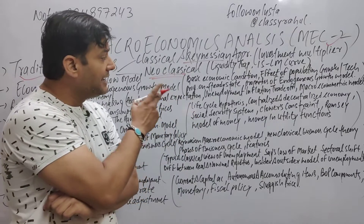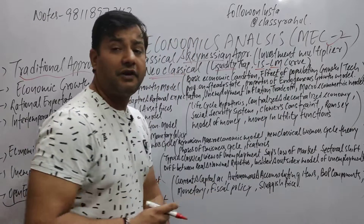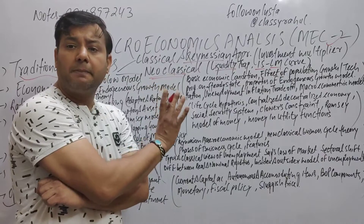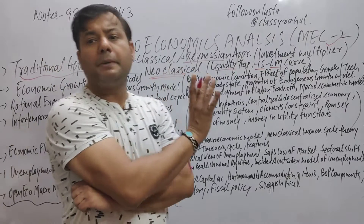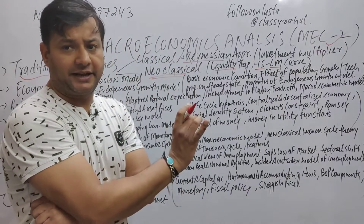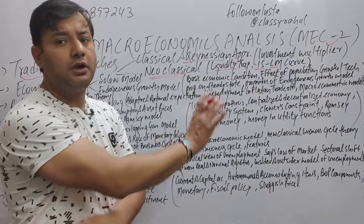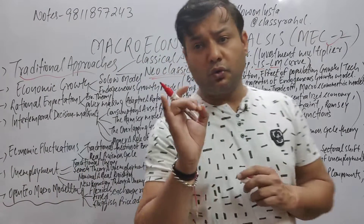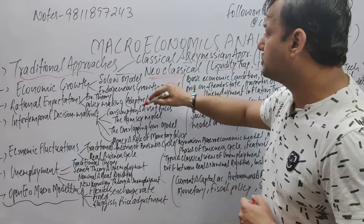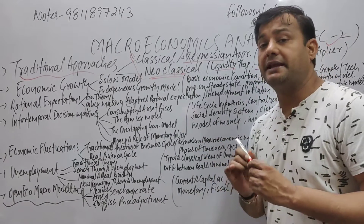First: investment multiplier — what does investment multiplier mean? What is the concept? Second: liquidity trap and the IS-LM curve approach. When talking about the IS-LM curve approach, make sure you confirm it. This is the basic requirement. So the first part has two approaches: traditional approach — classical and Keynes — and neoclassical. Here we have to do the third question as well.